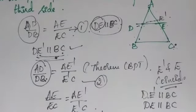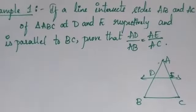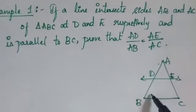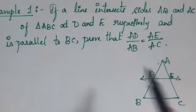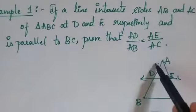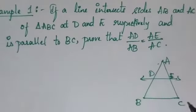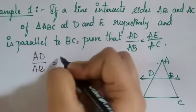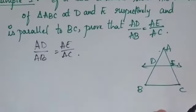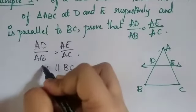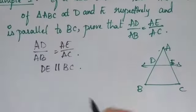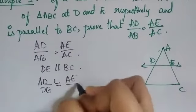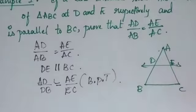Now let's look at an example. A line intersects AB and AC of triangle ABC at D and E respectively, and DE is parallel to BC. We need to prove that AD/AB = AE/AC. Since DE is parallel to BC, by the Basic Proportionality Theorem: AD/DB = AE/EC.